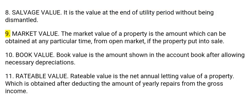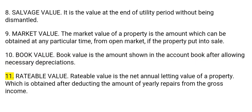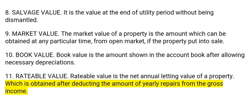9. Market value: The market value of a property is the amount which can be obtained at any particular time from the open market if the property is put into sale. 10. Book value: Book value is the amount shown in the account book after allowing necessary depreciations. 11. Ratable value: Ratable value is the net annual letting value of a property, which is obtained after deducting the amount of yearly repairs from the gross income.